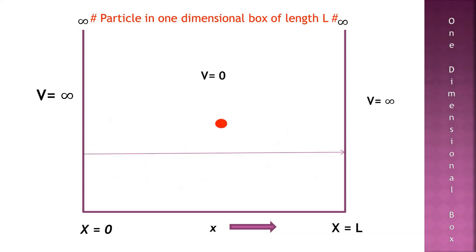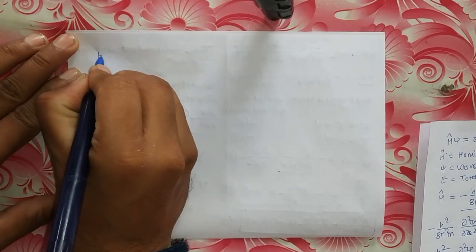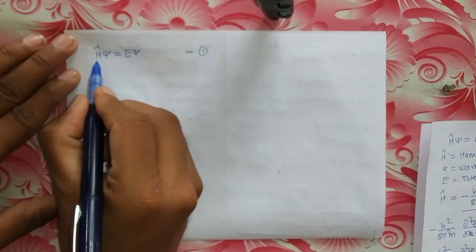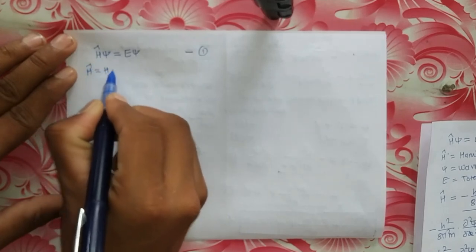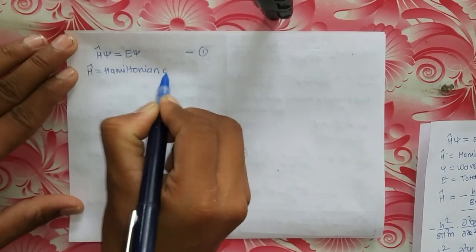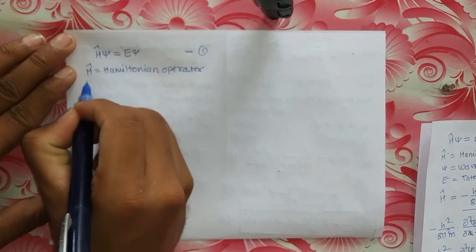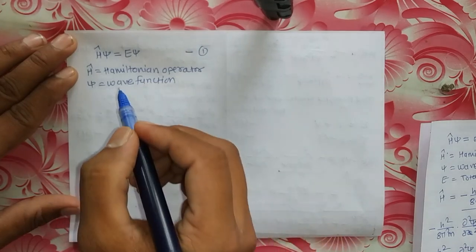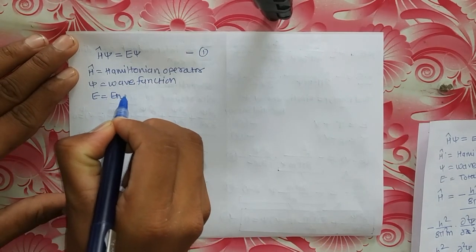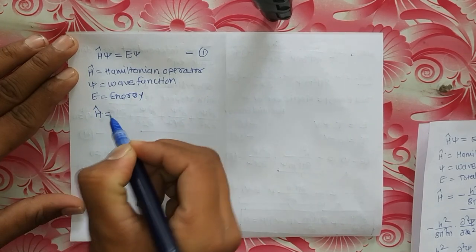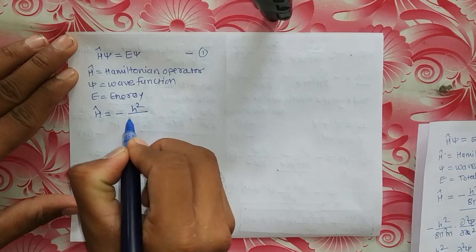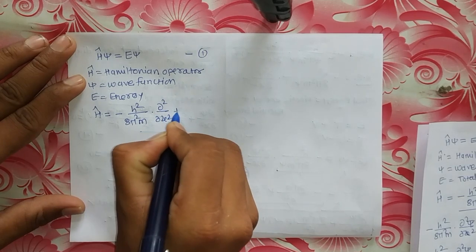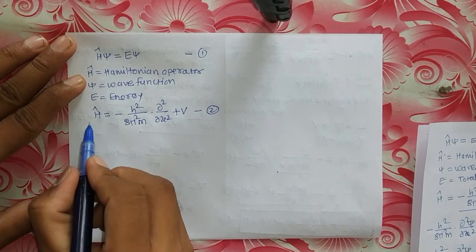Let us derive the Schrödinger equation. We start with the eigenvalue equation: H-cap ψ = Eψ. This is equation number 1. H-cap is the Hamiltonian operator, ψ is the wave function, and E is the energy. The Hamiltonian operator is: H-cap = −h²/(8π²M) · ∂²/∂x² + V. This is equation number 2.